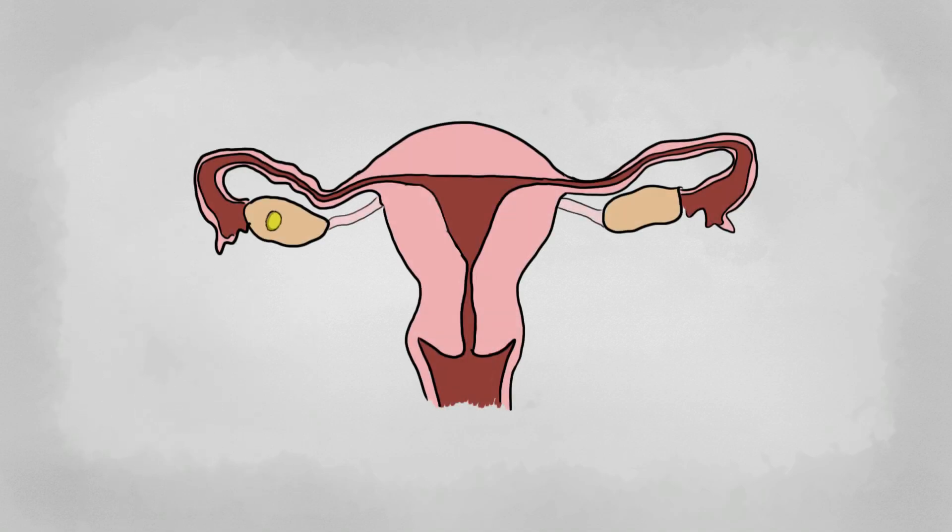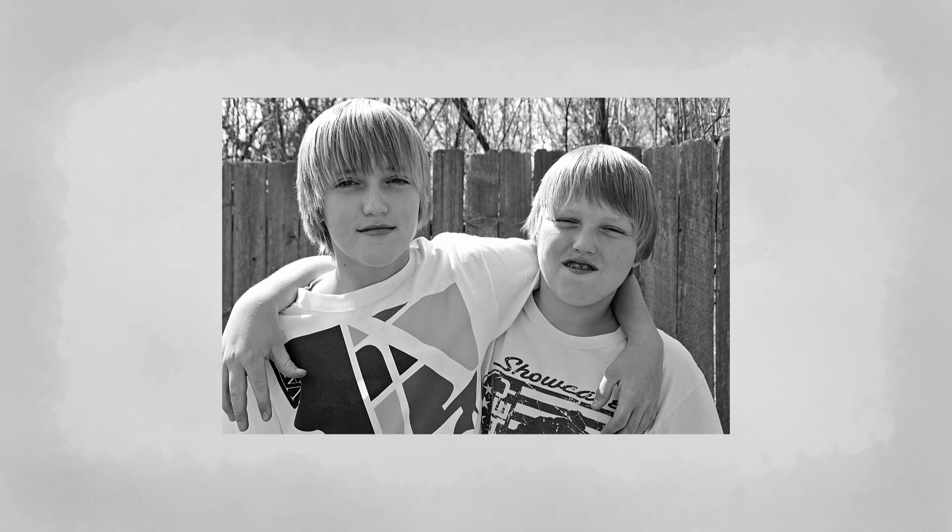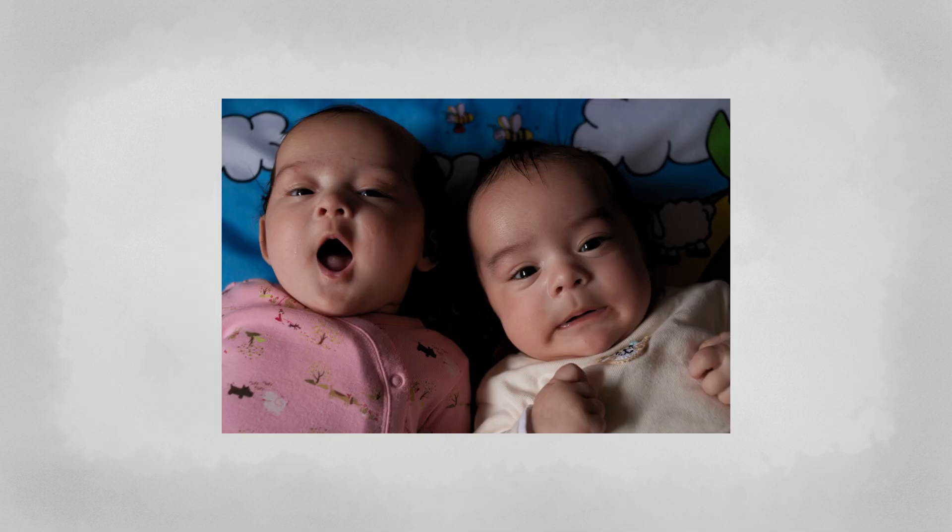While males produce a whole load of sperm, females produce only about one egg a month, each ovary taking a turn every other month. But sometimes, each ovary produces an egg on the same month. If both of these eggs get fertilized, then you get fraternal twins. Because these twins are formed from completely different eggs and completely different sperm, they are no different than any other sibling. They are each their own separate genome, compiled from their parents, and can even be different genders.